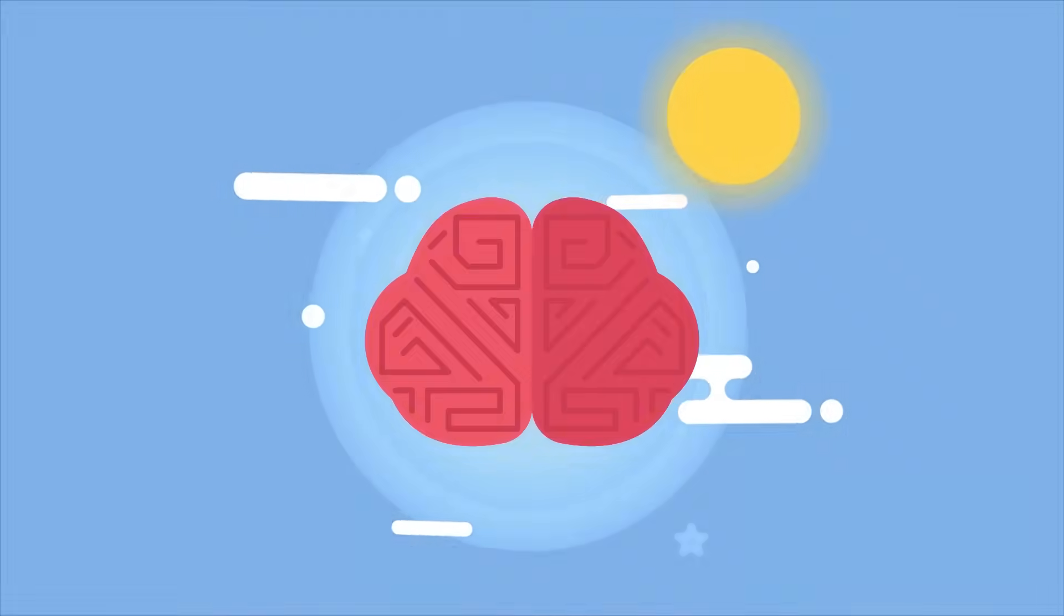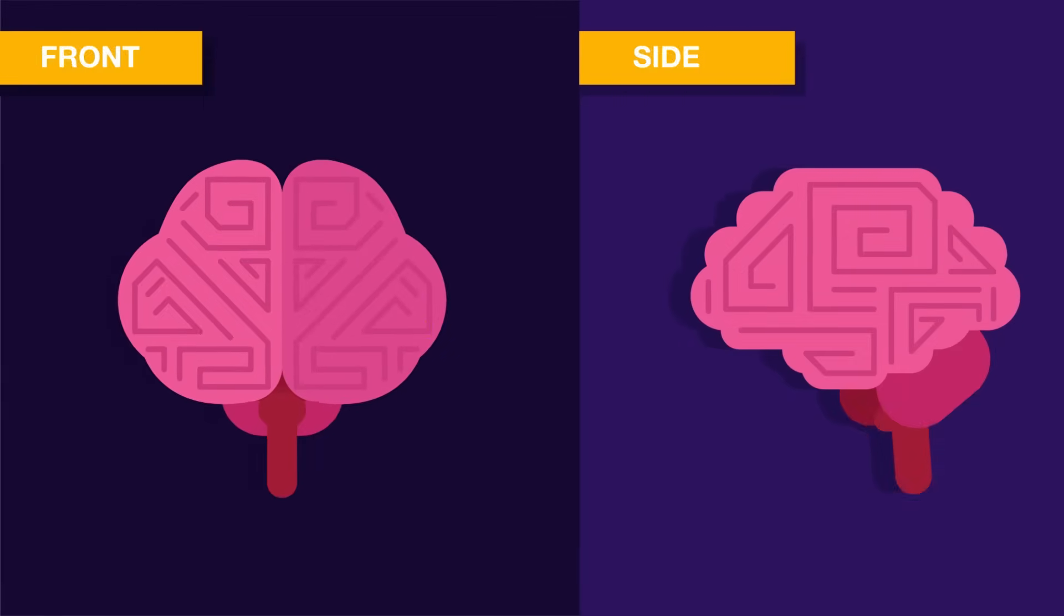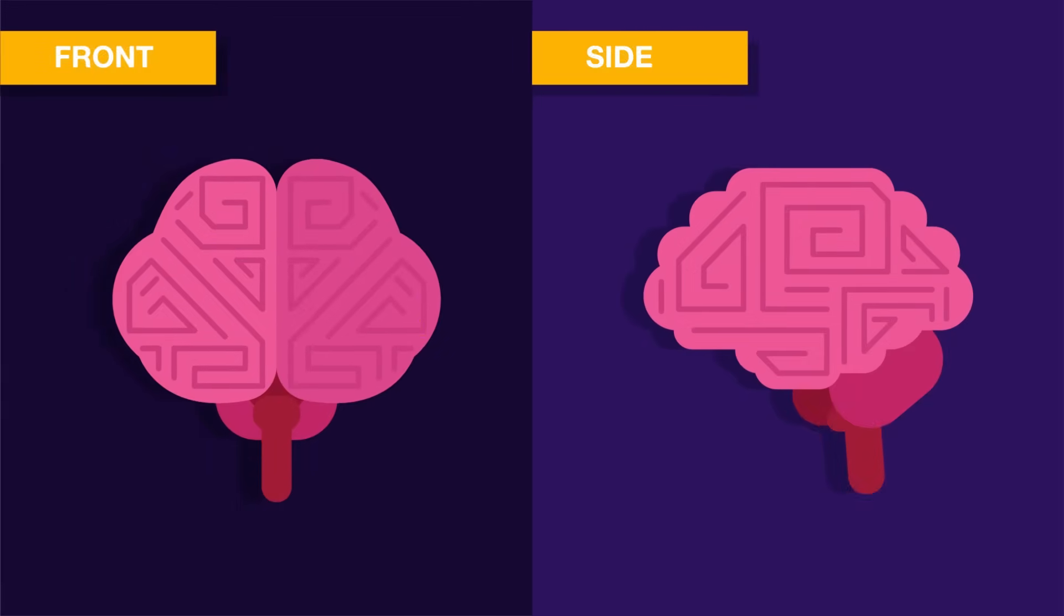Therefore, it never sleeps. Our brain can be divided into three main parts: the cerebrum, the cerebellum, and brainstem.